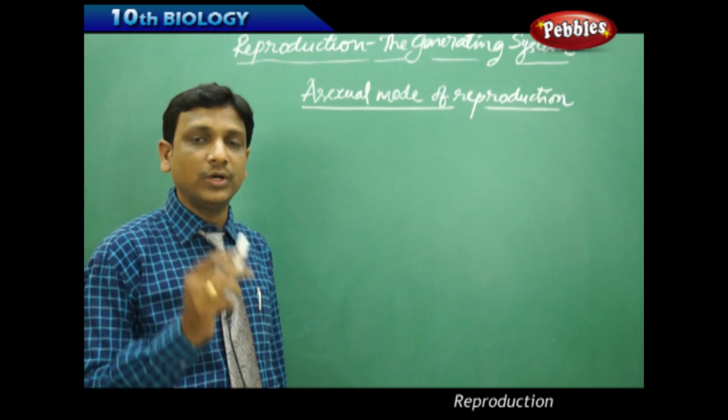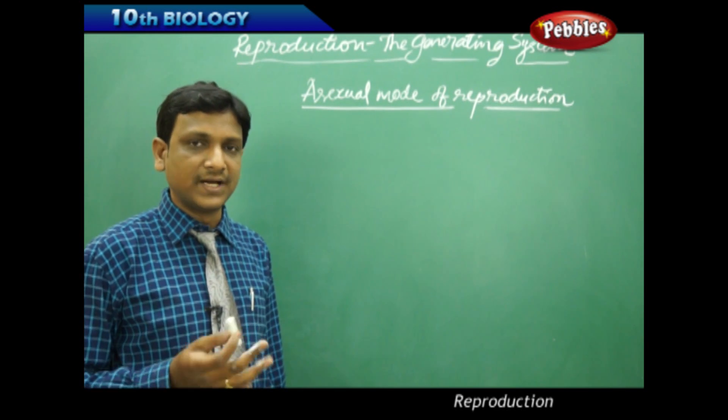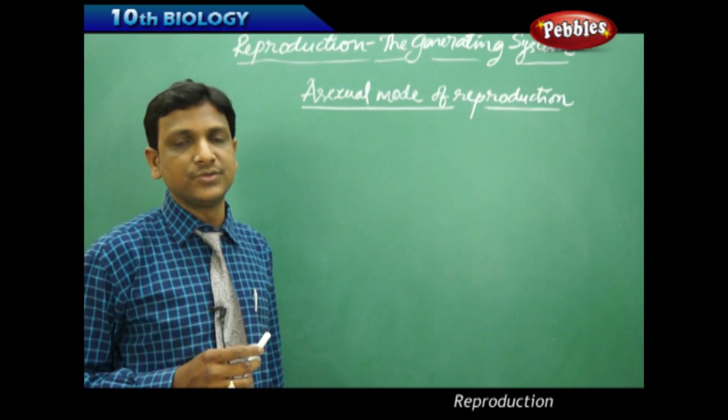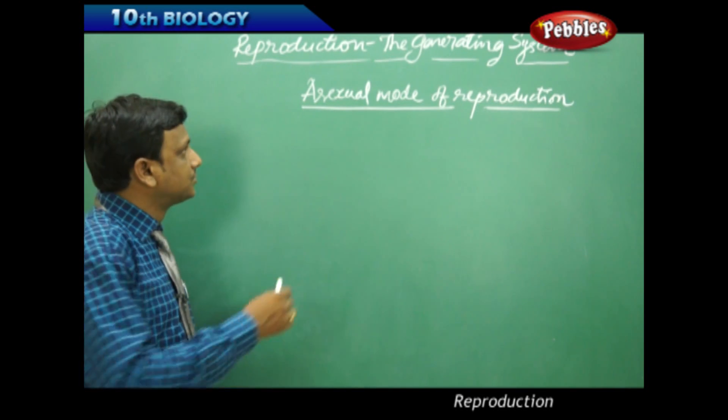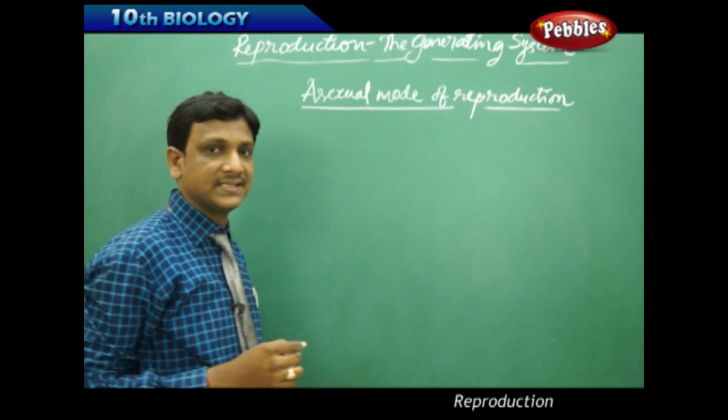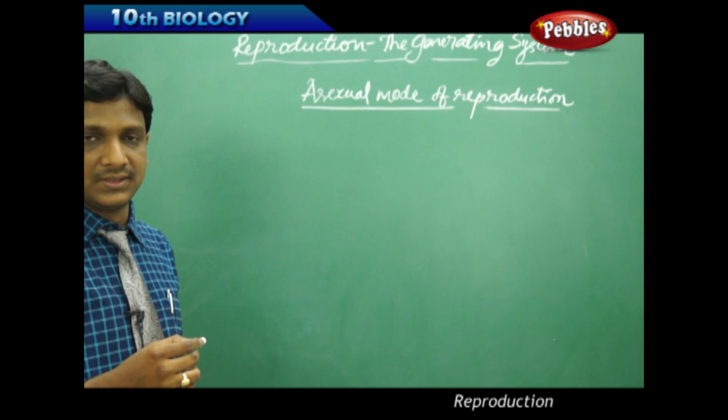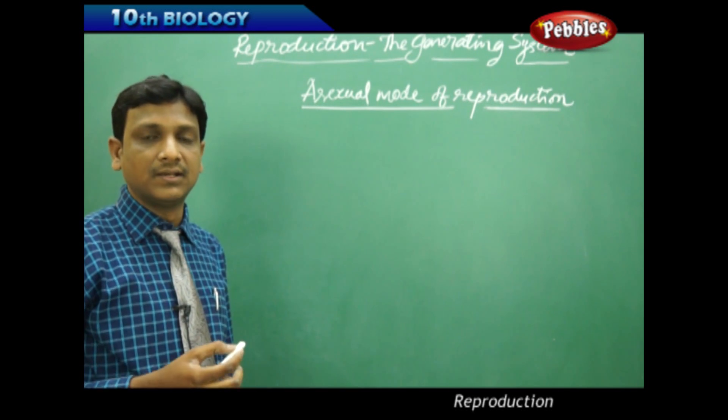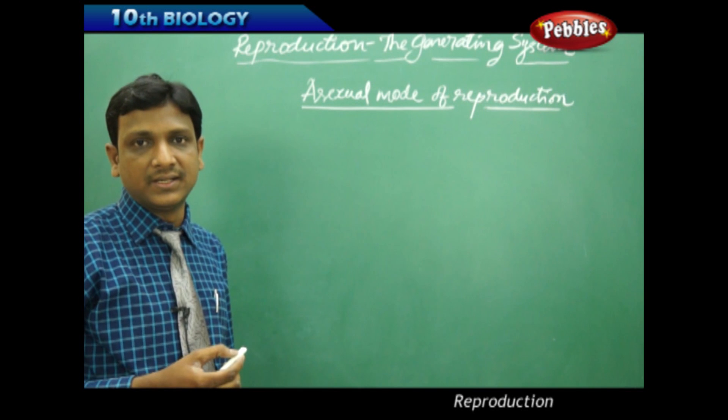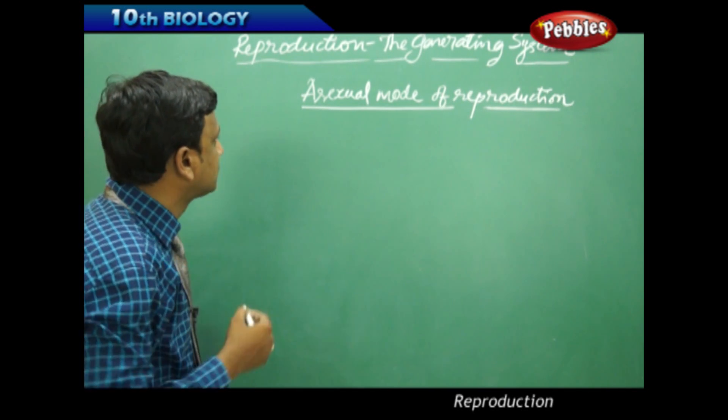Only a single parent is involved in the process of reproduction. There are no reproductive cells; the vegetative cells take part in the process of reproduction. Asexual mode of reproduction is observed in lower forms of organisms like Spirogyra, bacteria, Paramecium, Amoeba, and yeast, which show different methods of asexual reproduction.